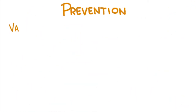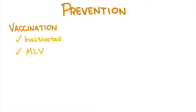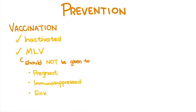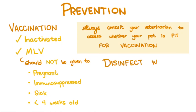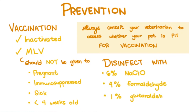Prevention: Vaccination is ideal. Inactivated and modified live virus vaccines are available. Modified live virus vaccines, however, should not be given to cats that are pregnant, immunosuppressed, sick, or less than four weeks of age. Always consult your veterinarian to assess whether your pet is fit for vaccination. Environmental disinfection can be done with 6% sodium hypochlorite, 4% formaldehyde, and 1% glutaraldehyde, with a contact time of 10 minutes at room temperature.